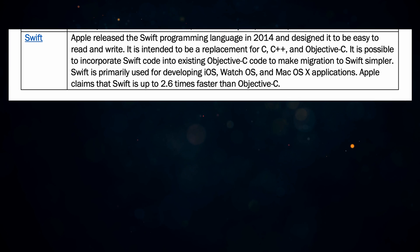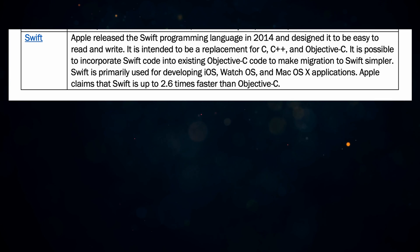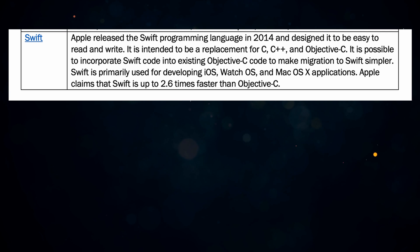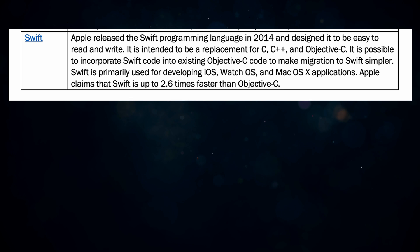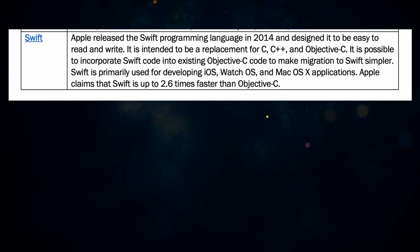Number six is Swift, Apple's programming language that many people started using instead of Objective-C for iOS apps. It is intended to be a replacement for C, C++, and Objective-C, and it is possible to incorporate Swift code into existing Objective-C code to make migration simpler. Swift is primarily used for developing iOS, watchOS, and macOS applications, and Apple claims that Swift is up to 2.6 times faster than Objective-C.